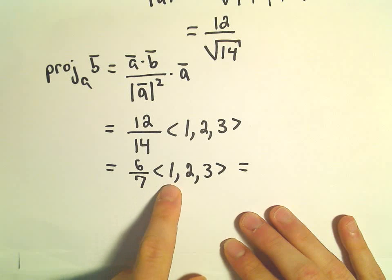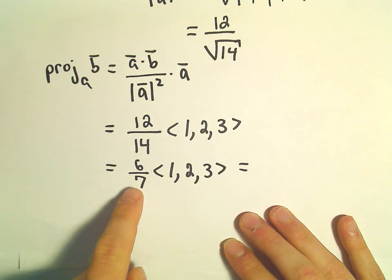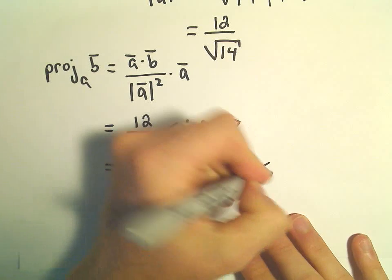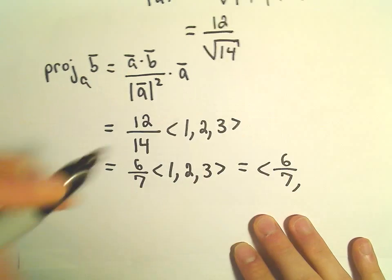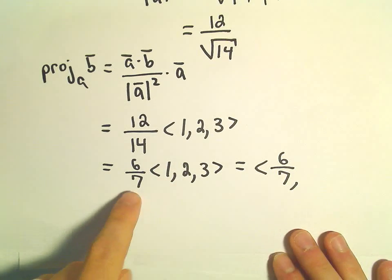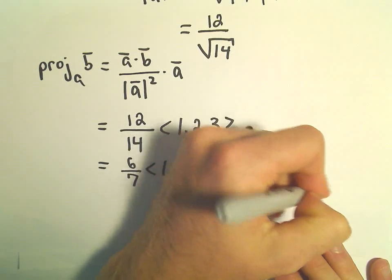So, we'll get 6 over 7 times 1, which will just be 6 over 7. We'll get 6 over 7 times 2, which will give us 12 over 7.